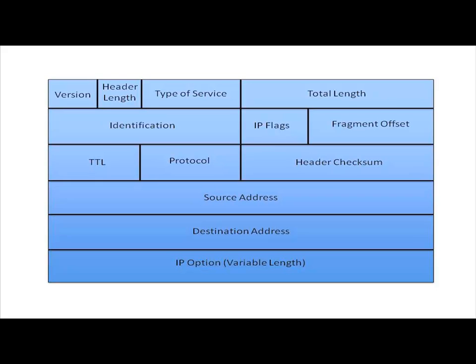The TTL field is actually a very good thing — it can prevent a layer three topological loop from forming and endlessly circulating a packet around the network. We don't have this luxury at layer two; there is no time-to-live value in a frame header, and as a result we can get endlessly circulating frames at layer two. That's why we need something like the spanning tree protocol to break a layer two topological loop. Also notice the protocol field — it's pointing up to layer four, indicating which protocol we're communicating with at layer four, such as TCP or UDP. And one other field is the TOS, the type of service field — this is for quality of service. We typically use the six left-most bits in this eight-bit field to indicate a priority value of a packet.